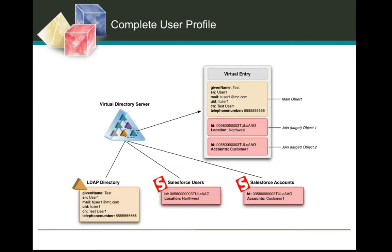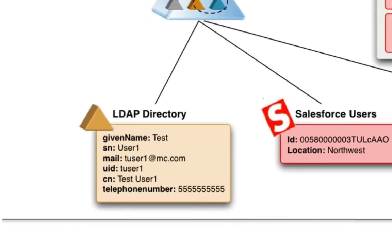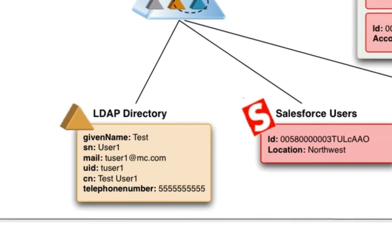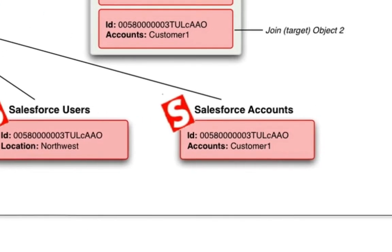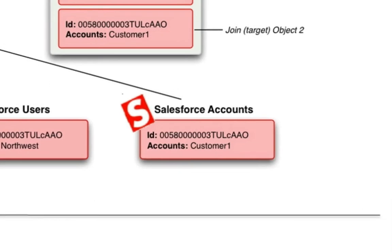Within the virtual directory server, we're pulling together information coming from three separate sources. The first is our LDAP directory — our enterprise directory. From that directory, we're getting information like the user's name, their email address, and their telephone number. We then join that information to include details coming from Salesforce about that user, which includes the region that they manage. And then we do an additional join to show the various accounts associated with that user.